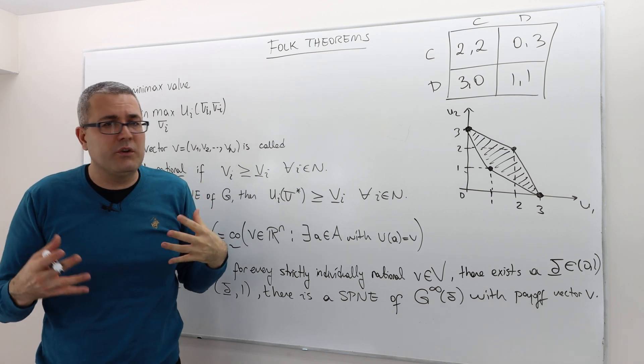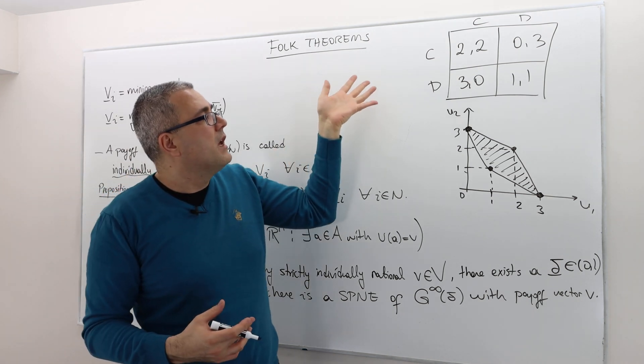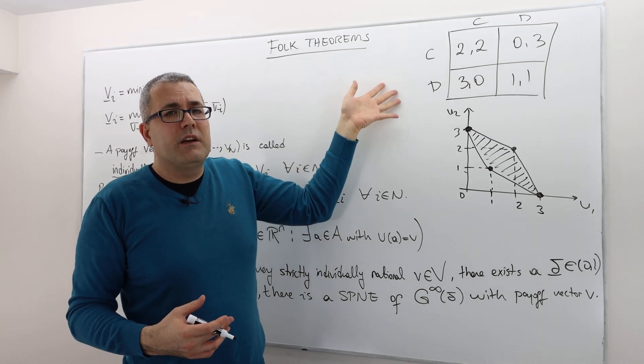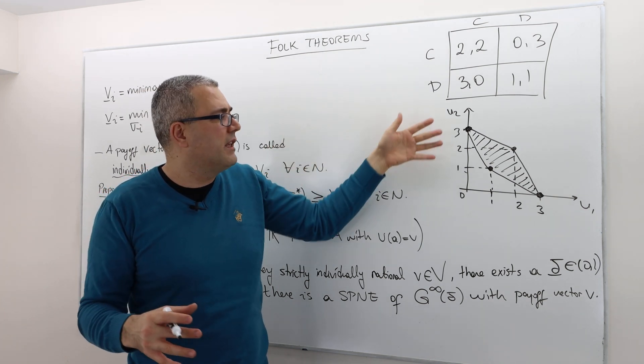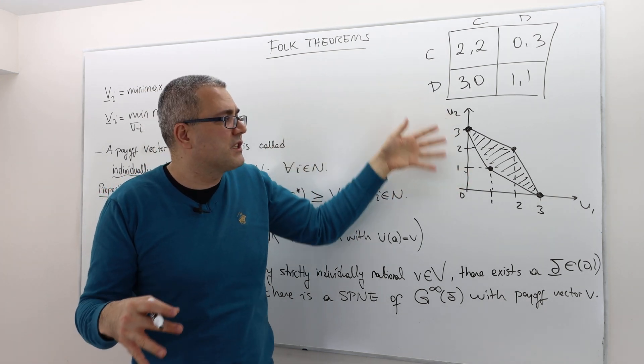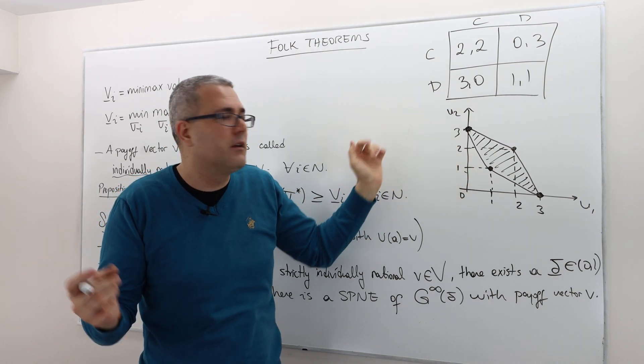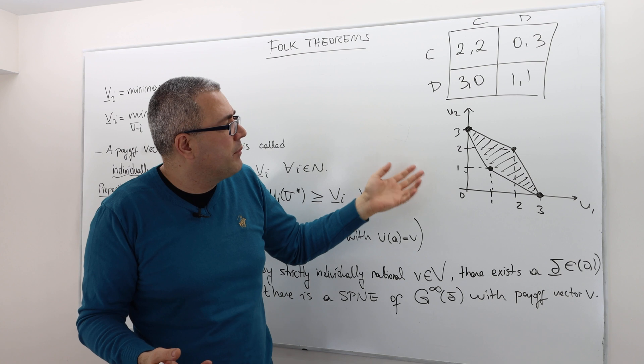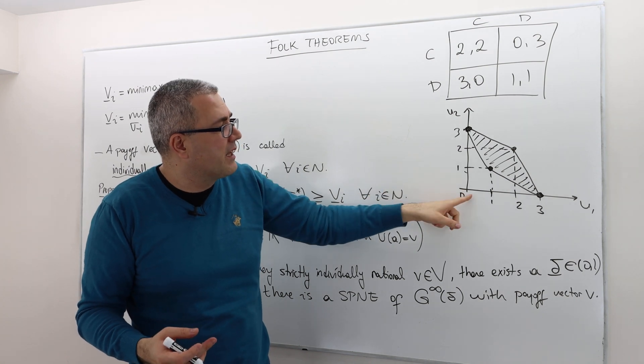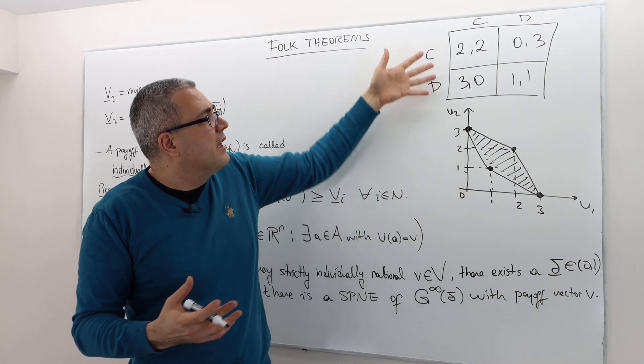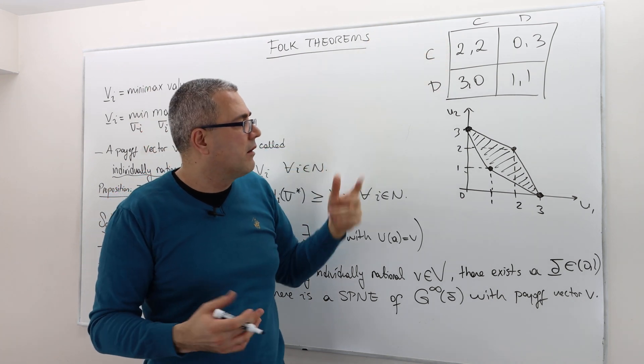What does that mean intuitively? It says the following. If two players are playing this game, there's no way they can get a payoff outside of this shape, outside of this region. It's impossible. All right. Which makes sense, right? Because if one player gets zero, the other cannot get zero. I mean, it's impossible in this game.